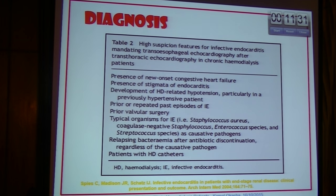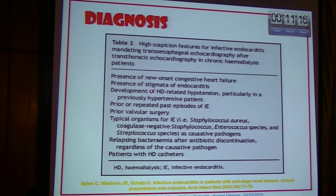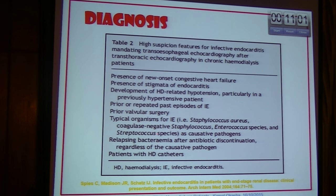These are the data that may lead you to suspect the patient is at risk for infective endocarditis. If one or more of these manifestations are present — new onset congestive heart failure, presence of stigmata for endocarditis, prior repeated episodes of infective endocarditis, pulmonary septic emboli, typical organisms for infective endocarditis like Staphylococcus aureus or streptococcus species, relapsing bacteremia, or a patient on hemodialysis — these should raise suspicion.